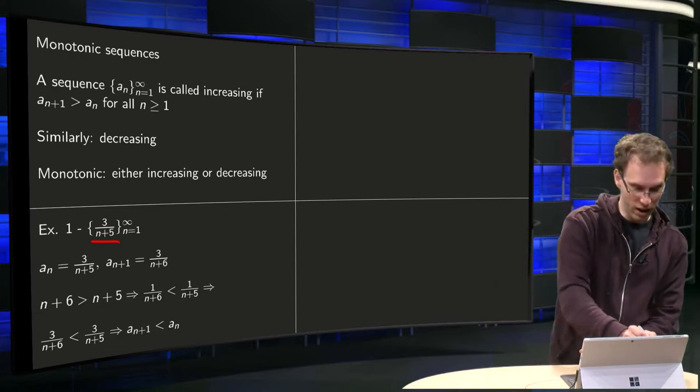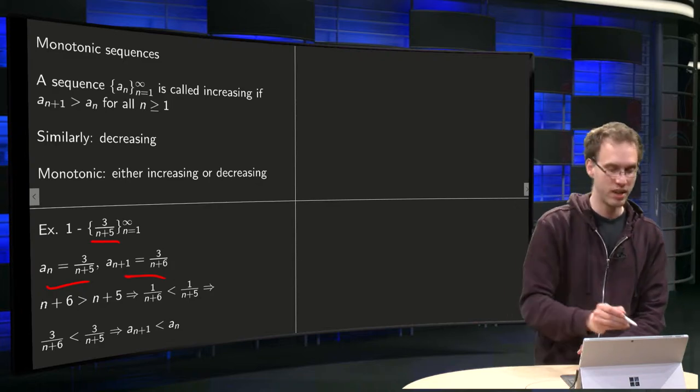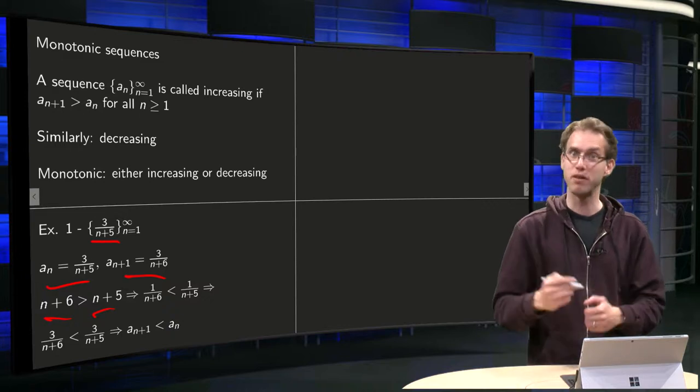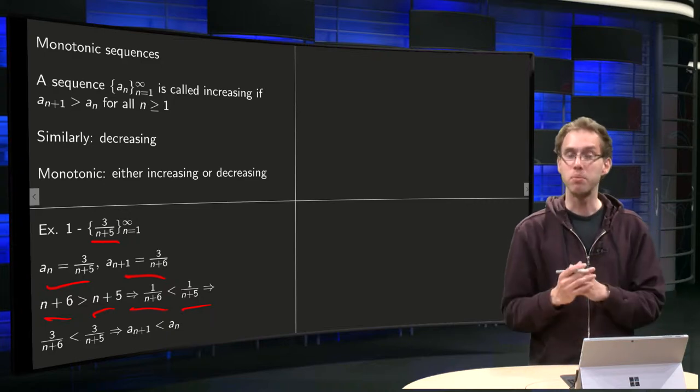Well, we have An equals 3/(n+5), An+1 equals 3/(n+6). Now we know of course that n+6 is bigger than n+5 because 6 is bigger than 5. So if you do 1/(n+6) that becomes smaller than 1/(n+5), the inequality is reversed.